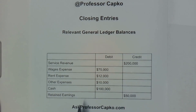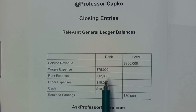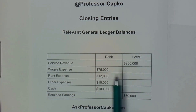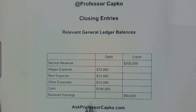I'm showing some relevant general ledger balances. In this case we have a service revenue credit balance of $200,000, and then our expenses all have debit balances: wages expense of $75,000, rent expense of $12,000, and other expenses lumped together as $10,000. We've got a cash balance of $100,000, and our beginning retained earnings balance is $50,000 — whatever it is at the beginning of the year — and that will become relevant in a moment.